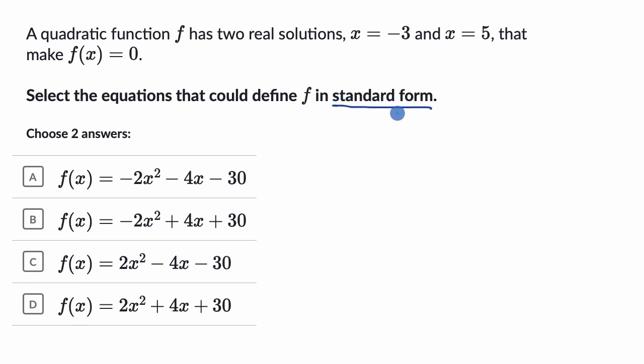So pause this video and have a go at that before we do this together. All right, so there's a bunch of ways you could approach this, but the way that I think about it is we can express this quadratic in terms of its two solutions. So you could have x minus the first solution, and the first solution here is when x is equal to negative three, and then times x minus the second solution when x is equal to five.